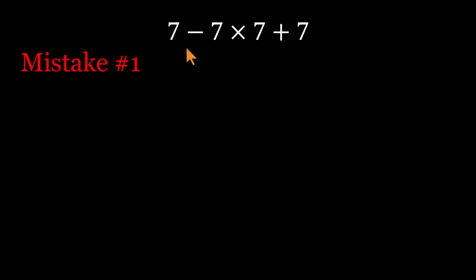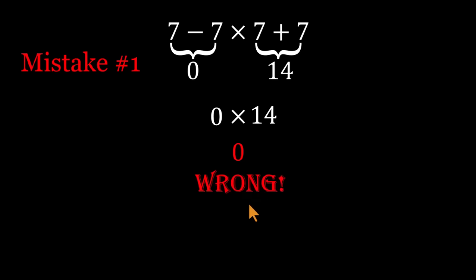First mistake. Some people group the 7s and force parentheses where they don't belong. They do 7 minus 7, which is 0, and 7 plus 7, which is 14. Then they multiply those results together. 0 times 14, and say that's 0. Quick and confident, but totally wrong.